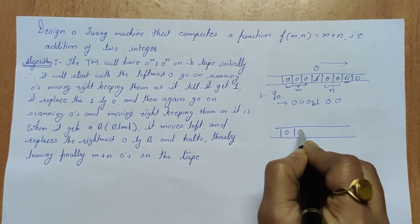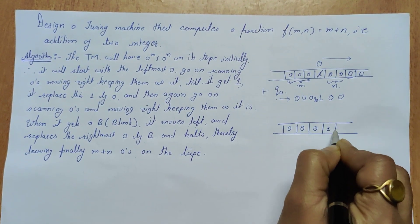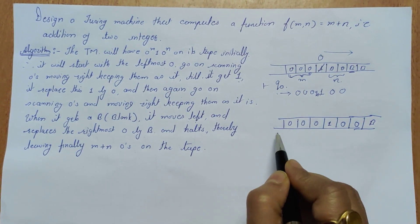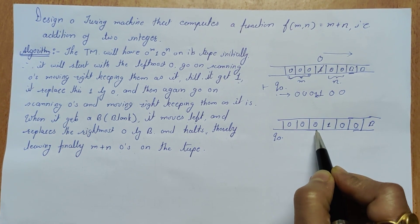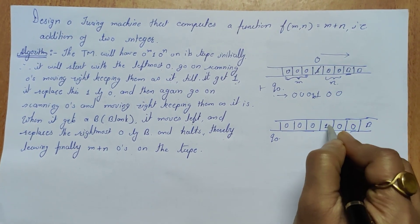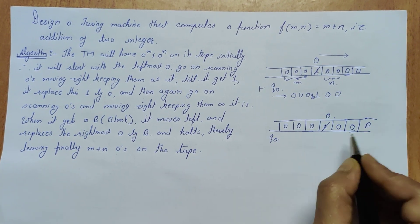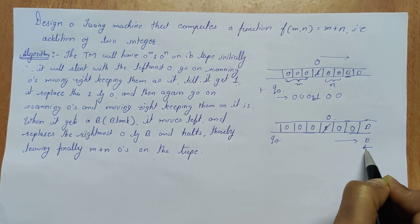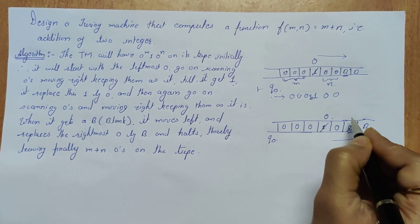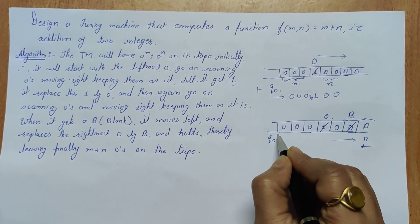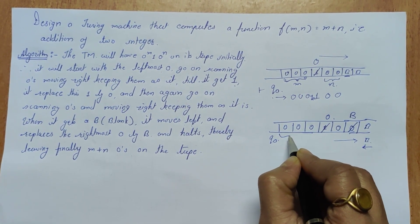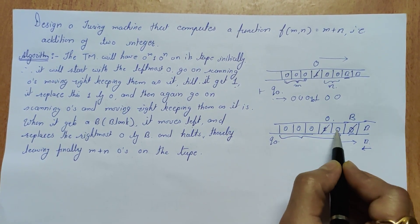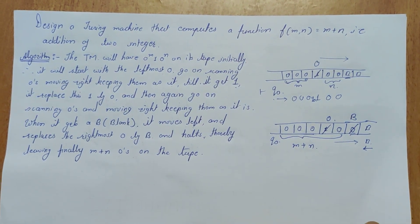Consider the example once again: the tape is 0000 1 00 then blank. Start from the left, read the zeros moving right. When we read the 1, replace it with 0 and move right until we get blank. On getting blank, move one position left and replace that zero with a blank. Finally the tape contains m+n zeros, that is 1, 2, 3, 4, 5 — five zeros.